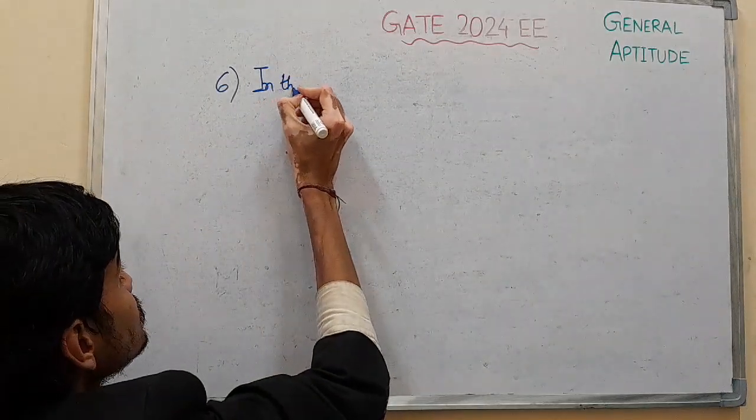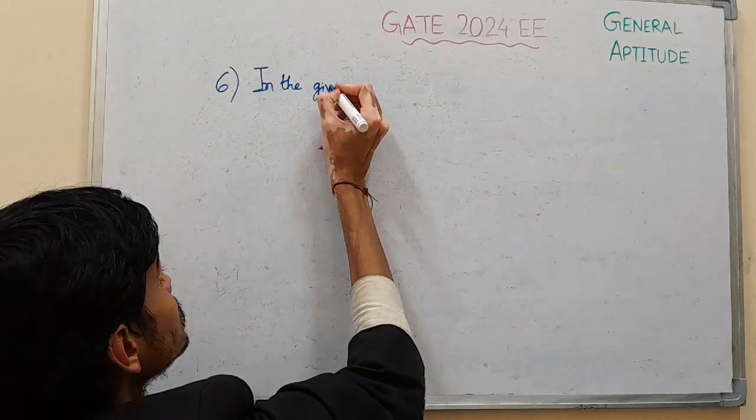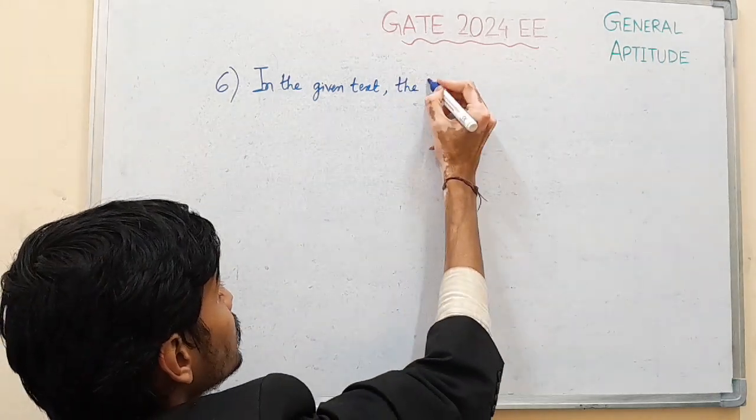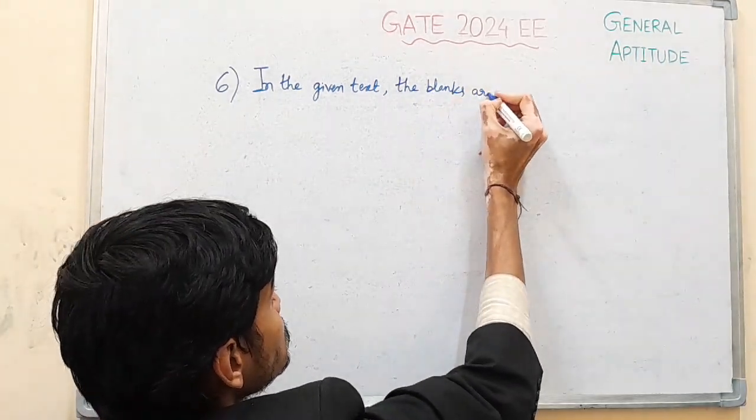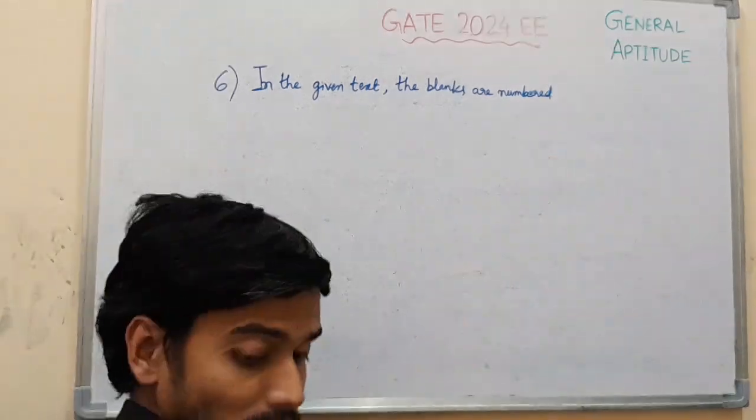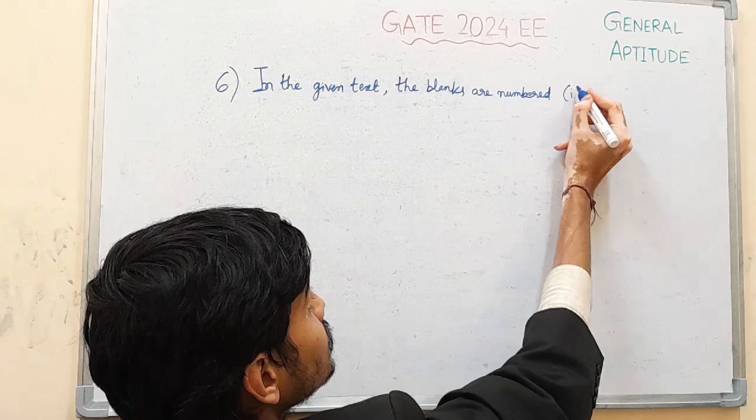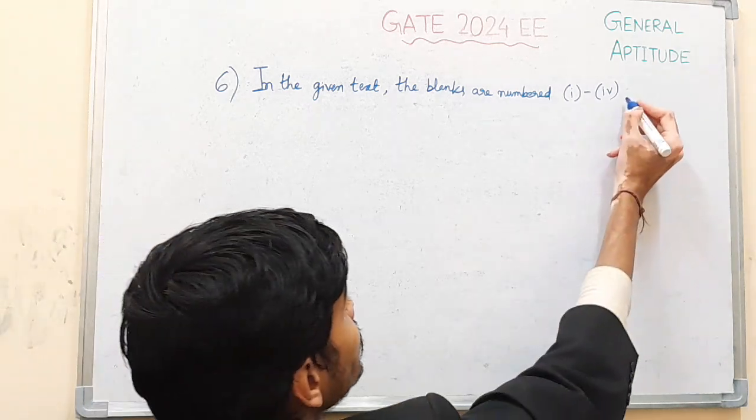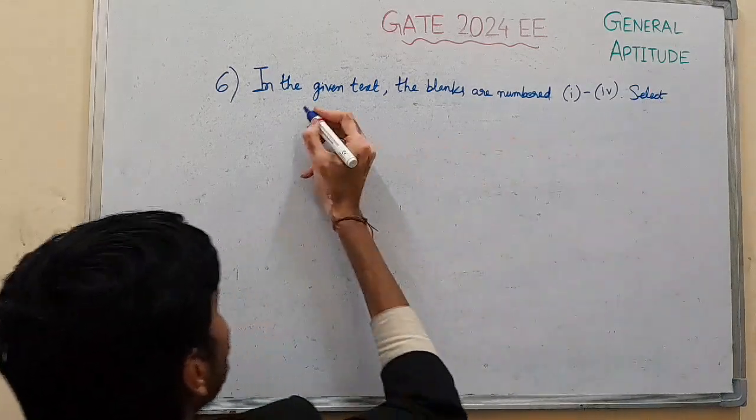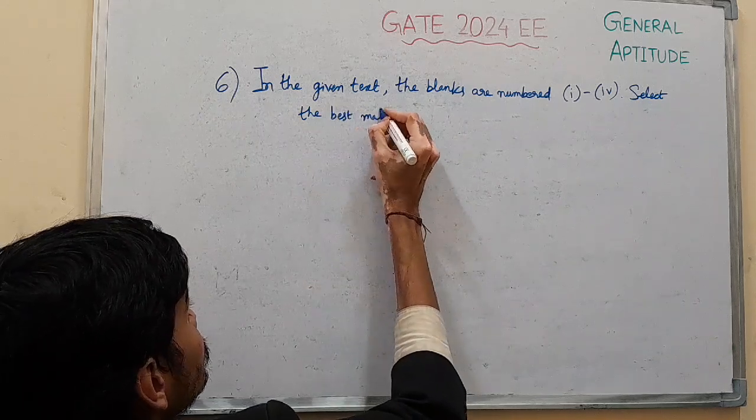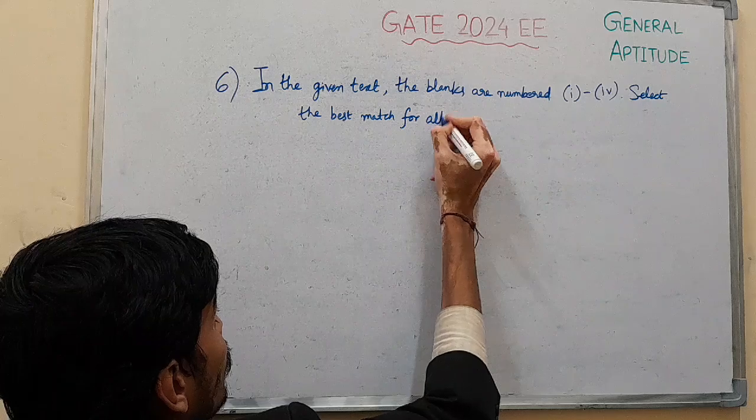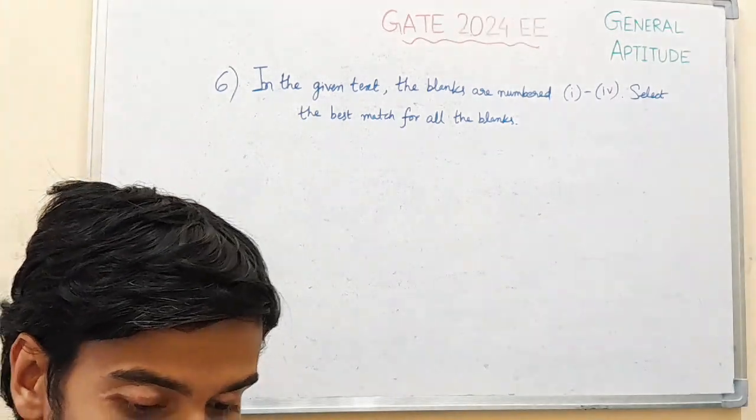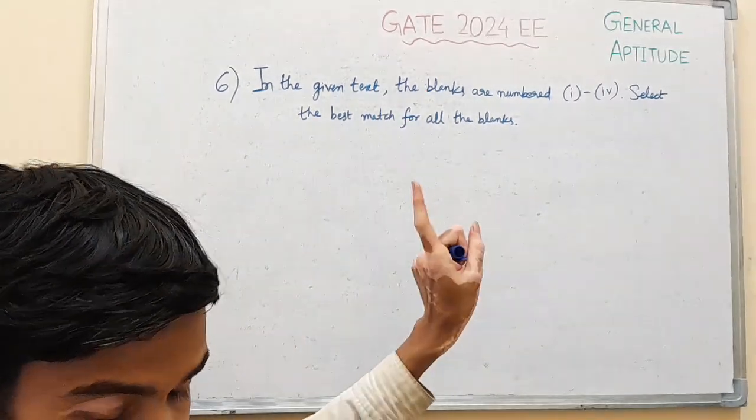In the given text, the blanks are numbered 1 to 4. Select the best match for all the blanks. Now sentence is given in English but fill the blanks with the options number 1 to 4.